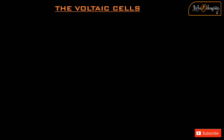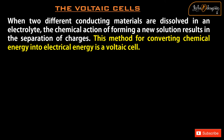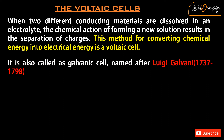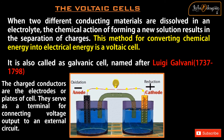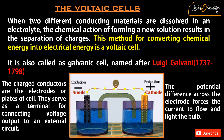The Voltaic cells: When two different conducting materials are dissolved in an electrolyte, the chemical action of forming a new solution results in the separation of charges. This method for converting chemical energy into electrical energy is a Voltaic cell. It is also called a Galvanic cell, named after Luigi Galvani, 1737–1798. In the figure, the charged conductors are the electrodes or plates of the cell. They serve as a terminal for connecting voltage output to an external circuit. The potential difference across the electrodes forces the current to flow and light the bulb.